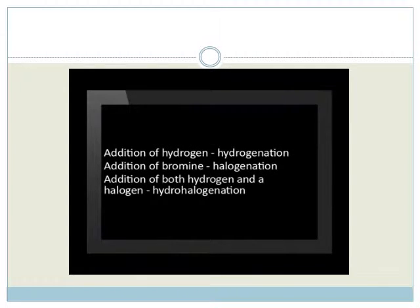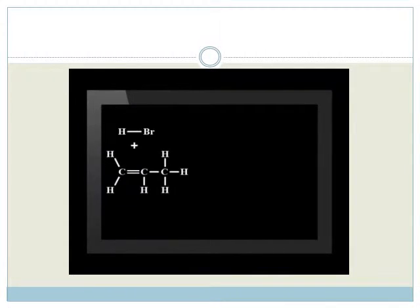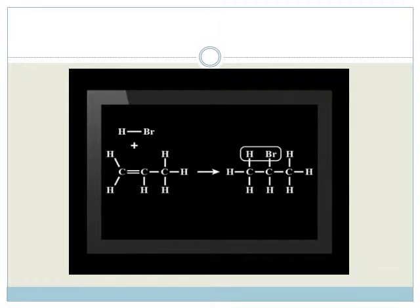We've seen that addition can occur with hydrogen in hydrogenation, while bromine or another halogen is added during halogenation. What if we add a molecule that contains both a halogen and hydrogen? We call this hydrohalogenation. In this example, hydrogen bromide is added to propene. Look at how the double bond breaks and allows the hydrogen and bromine to bond the carbon atoms. The product is 2-bromopropane and is once again a saturated hydrocarbon.